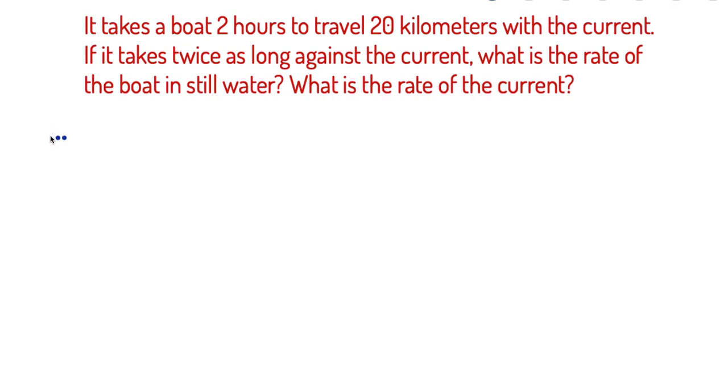I'm going to simply set up a chart here. I'm going to talk about with C, and the current. With the current, that's going to be C. Rate of the boat in still water, that's going to be R. So with C, and then I'm just going to say against C right here.